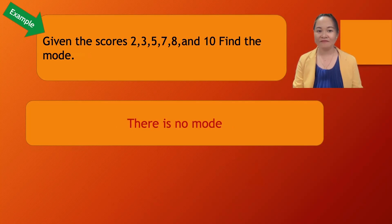Since the scores are unique, in this example there is no mode. Do not say the mode is zero—there is simply no mode. So it can be no mode, bimodal, multimodal, or one mode.